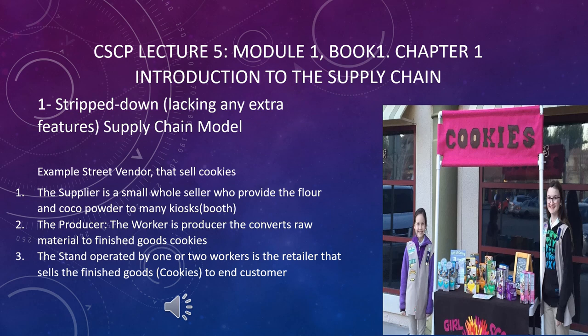Number one is the stripped-down — lacking any extra features — supply chain model. This is a very basic supply chain model. The example is the street vendor, as you can see on the snap, like the cookie seller. Here there are three entities: the supplier that gives the flour, cocoa powders, and other materials to produce the cookies; the producer that converts the raw material into finished goods; and then the stand at the booth operated by one or two workers — a retailer that sells the finished goods to the end customers.